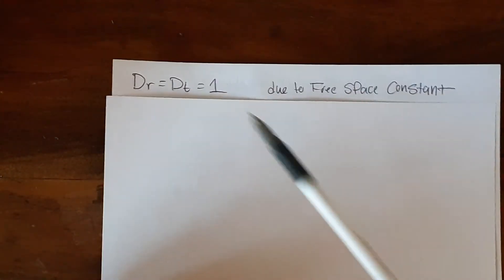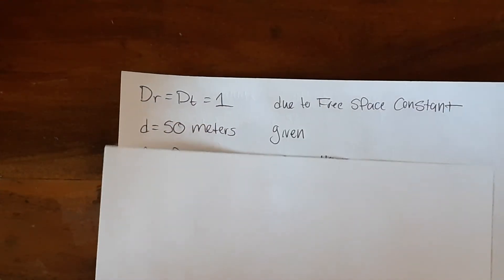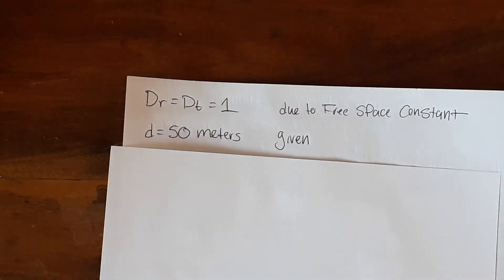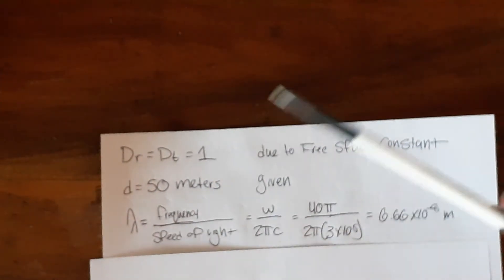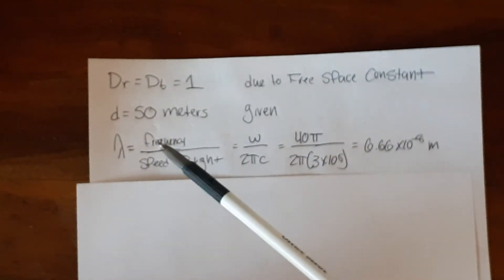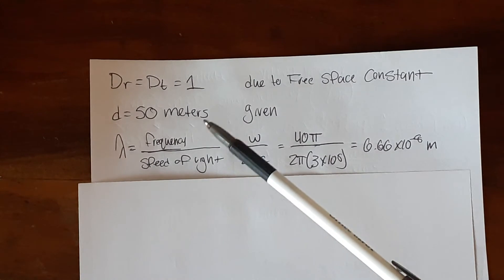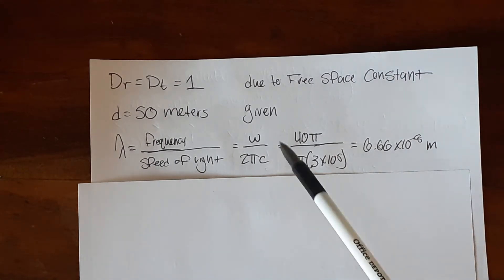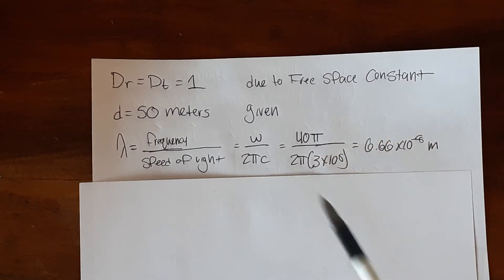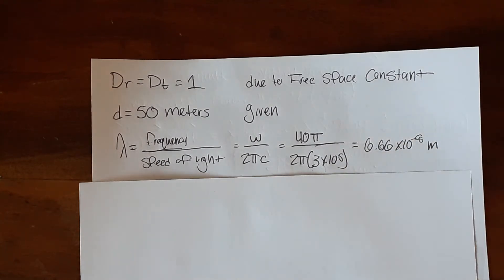So like I said earlier, our directivities are both going to be 1 due to the free space. Our distance is 50 meters, which was also given in the problem description. And our wavelength is equal to the frequency over the speed of light, which is how fast our wave is moving. We don't have frequency, but we do have angular frequency given by this 40 pi right here. So to get angular frequency, you just divide it by 2 pi, and that's what we get for the frequency. You divide the angular frequency by 2 pi. So then we also divide that by speed of light, and we get this for our wavelength. That's a very small wavelength, but whatever.